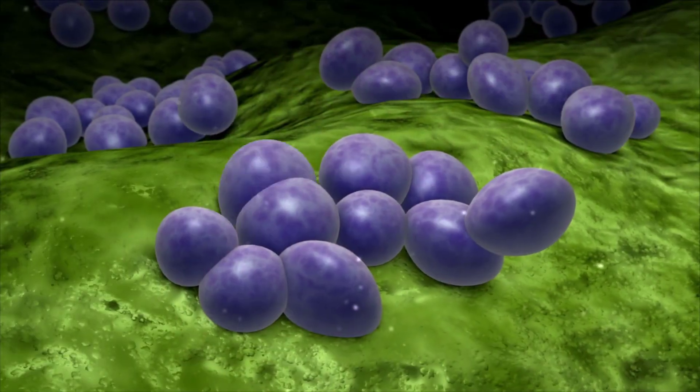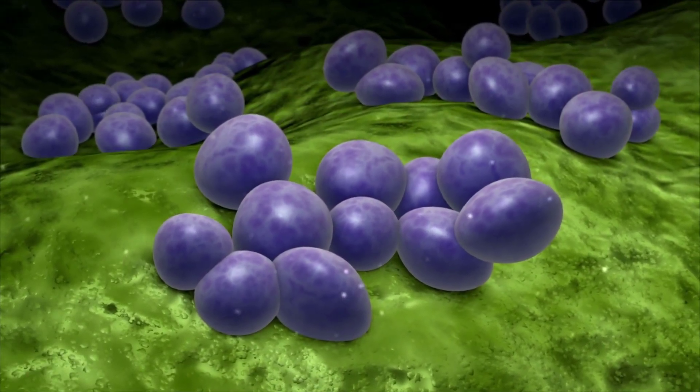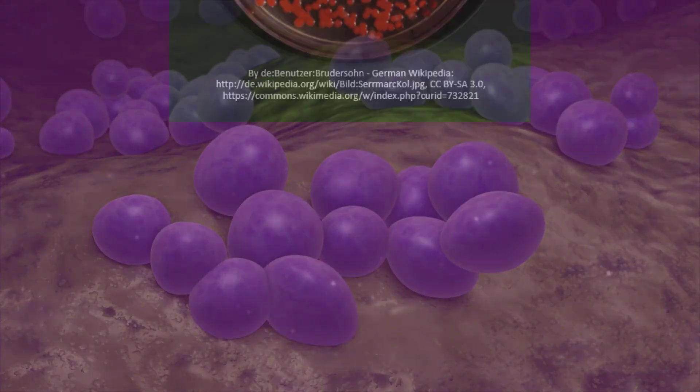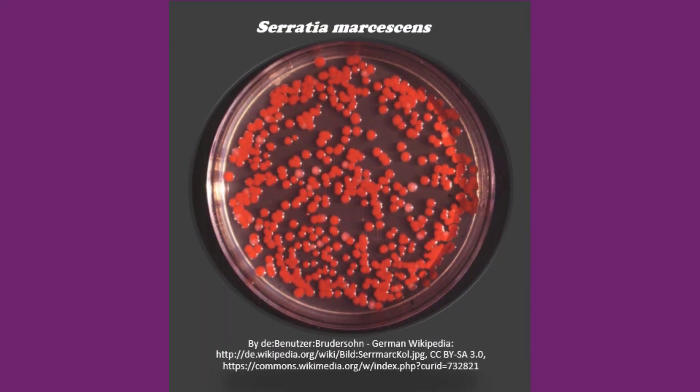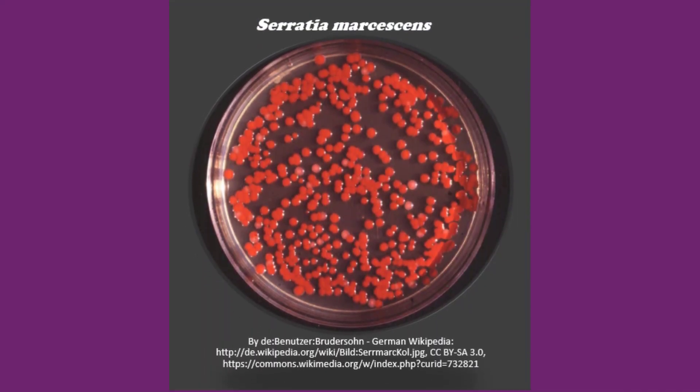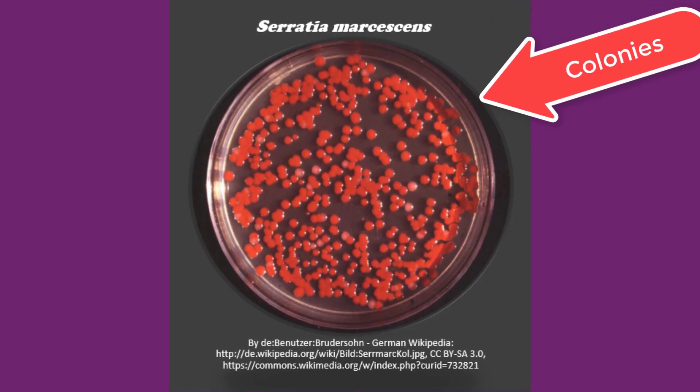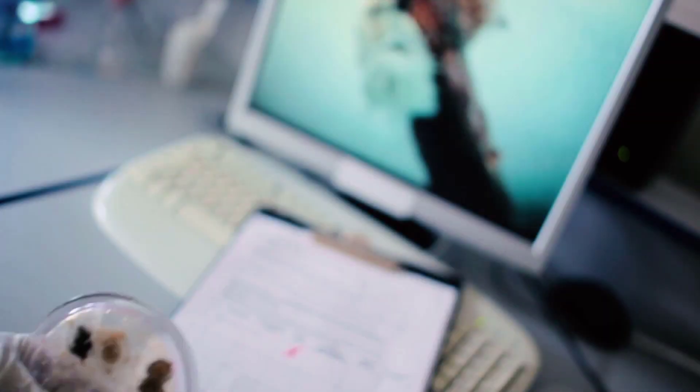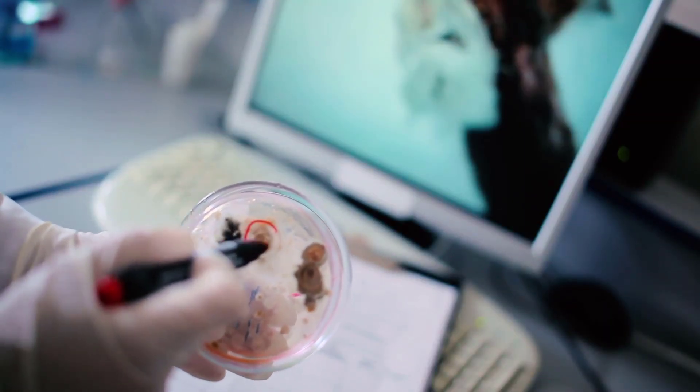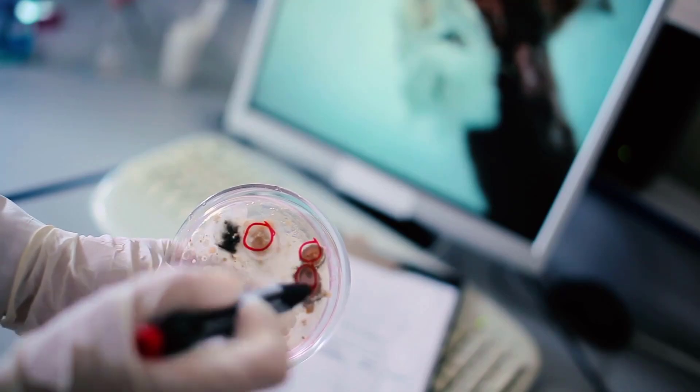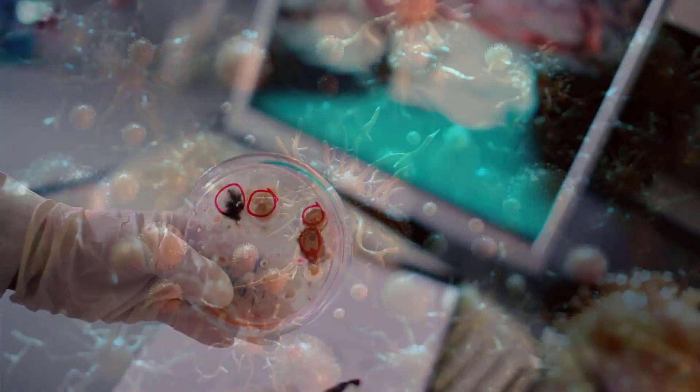Bacteria reproduce very rapidly. Each single cell divides about every 20 minutes. When a population of bacteria has multiplied to a thousand or more cells, a pattern of growth called a colony can be seen with the naked eye. The species, shape, and color of bacteria colony can be used to identify the species of bacteria that form it.